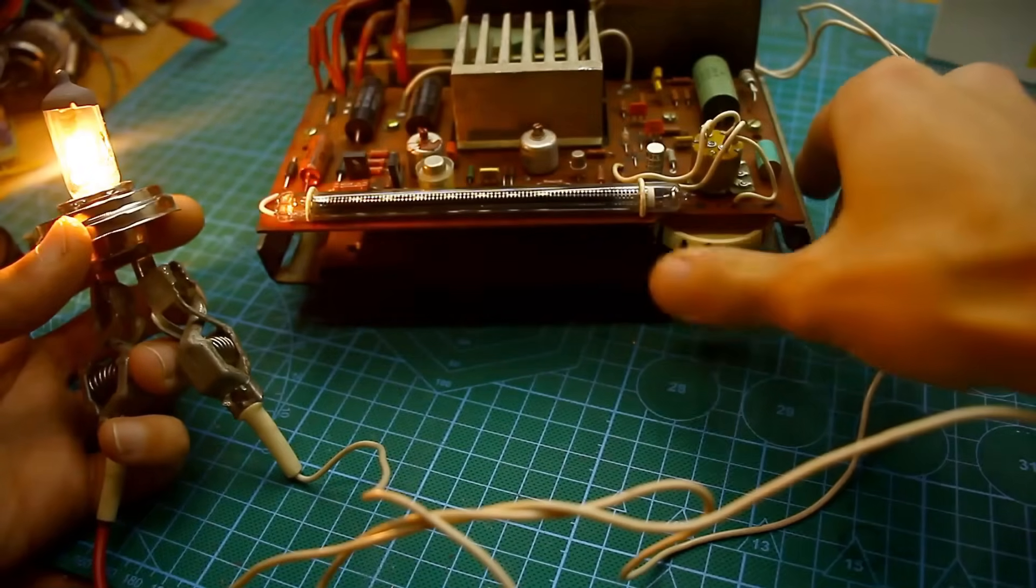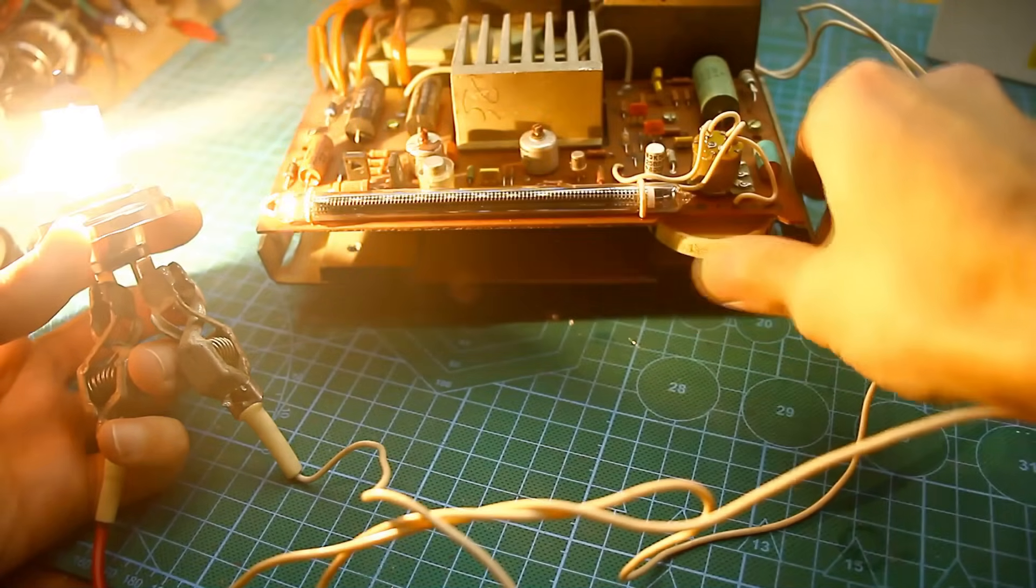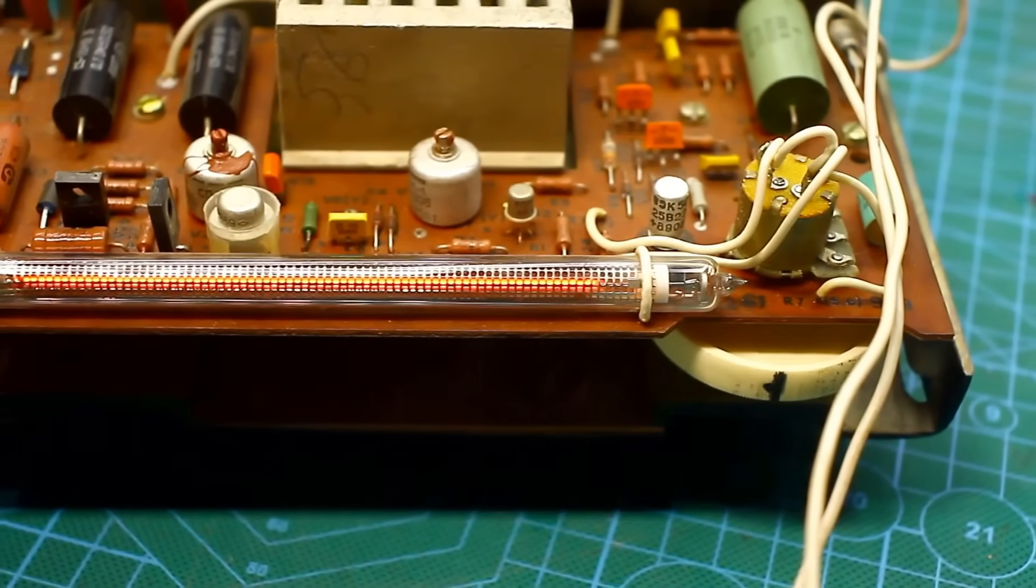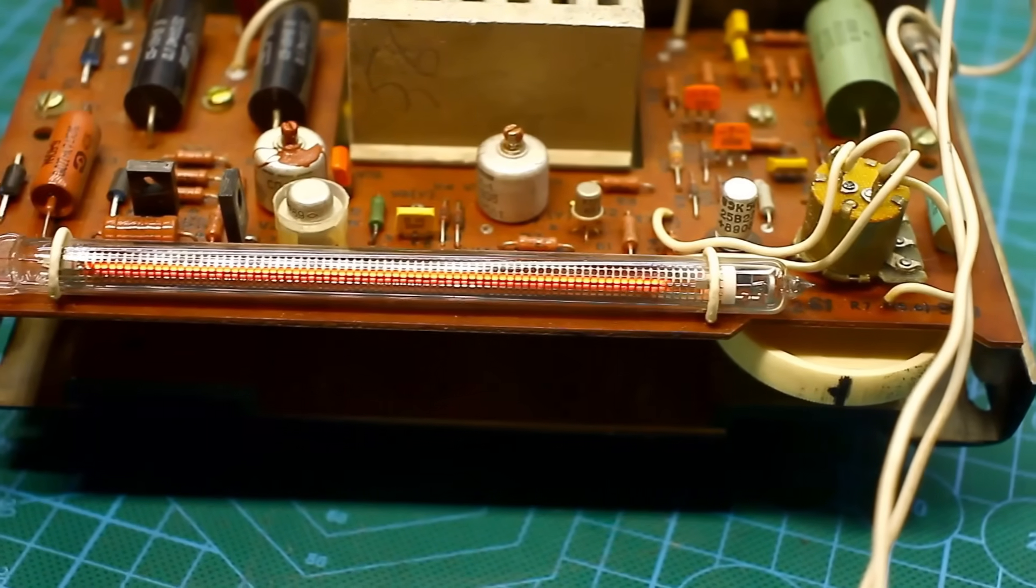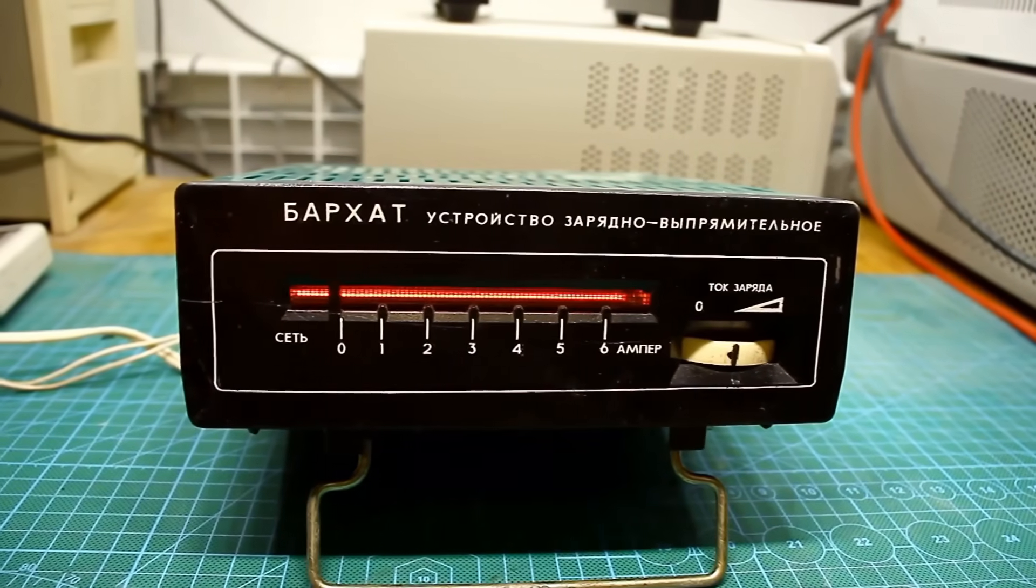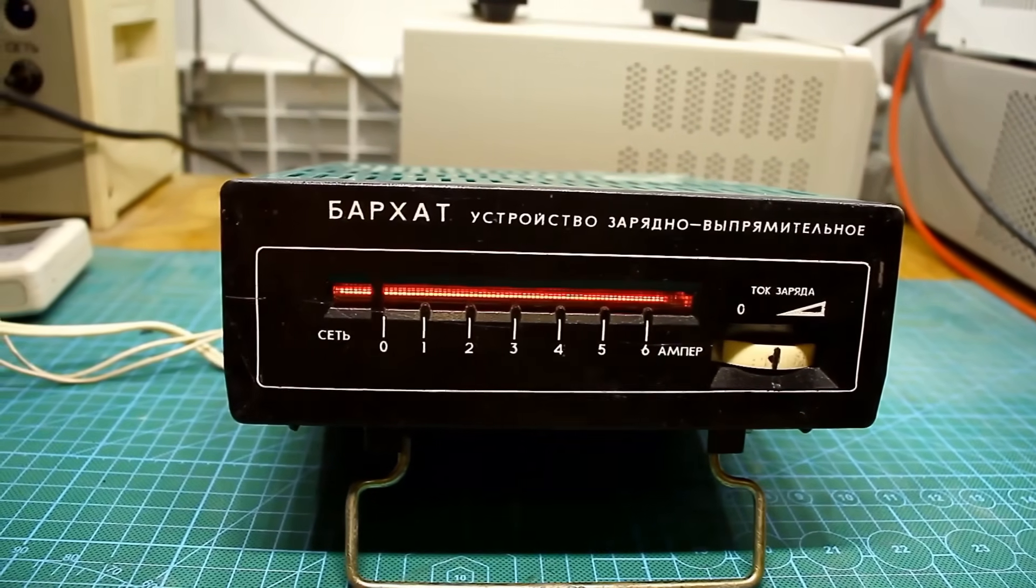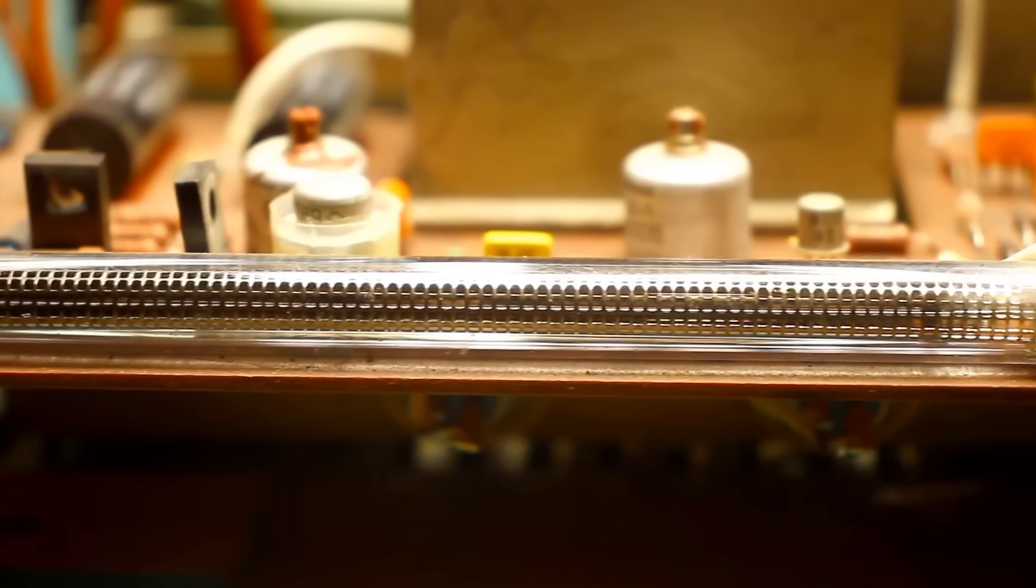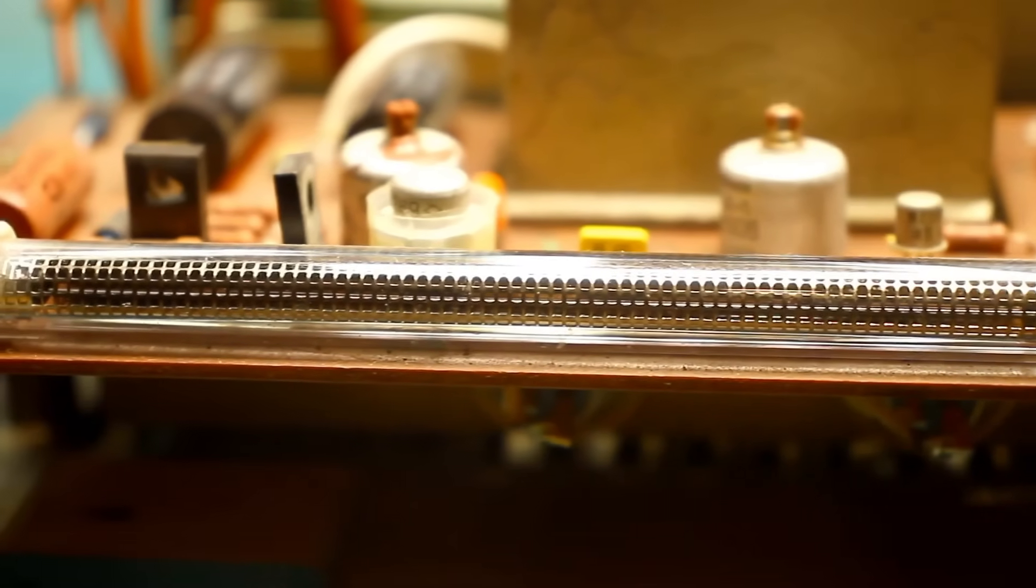By the way, according to the subscriber, the charger is almost in working condition. Only the indicator doesn't work, the charging current indicator. This indicator is precisely the cherry on top. It is unlike anything else. Here it is neither analog nor digital, but gas discharge and very attractive. The problem is that the gas discharge indicator itself seems to be working, but it doesn't show the charging current.